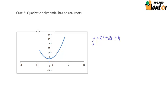Case 3 is when a quadratic polynomial has no real roots. That happens when the graph does not intersect the x-axis anywhere. This is the graph of a polynomial given by y = x² + 2x + 4. When plotted on a coordinate plane, we can see it does not intersect the x-axis anywhere, so this quadratic polynomial has no real roots.